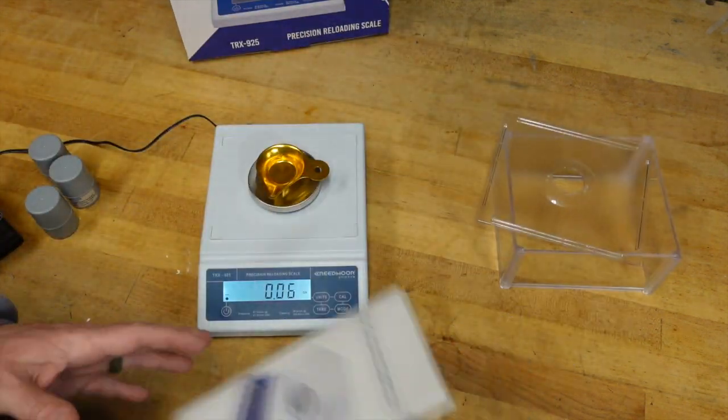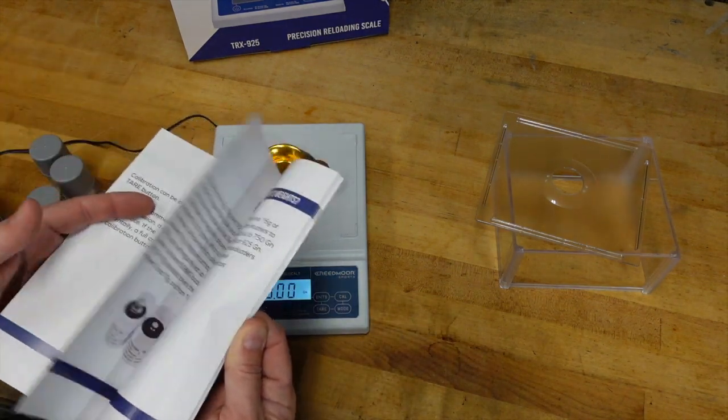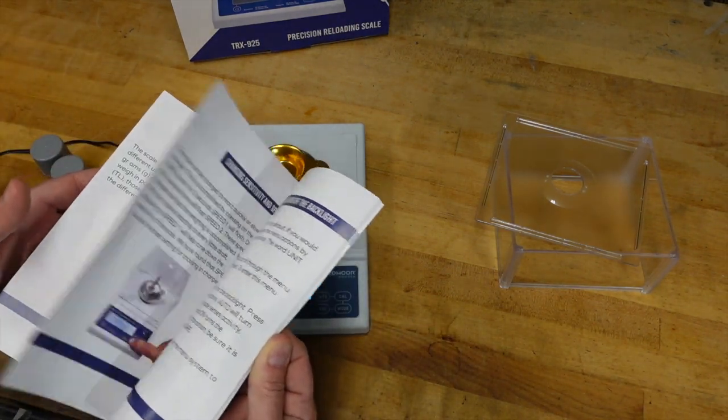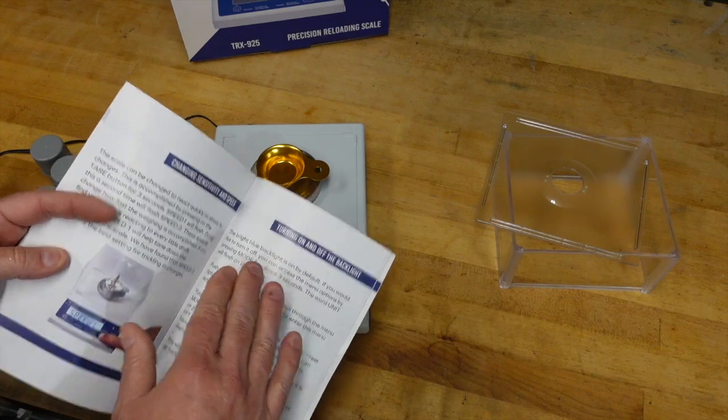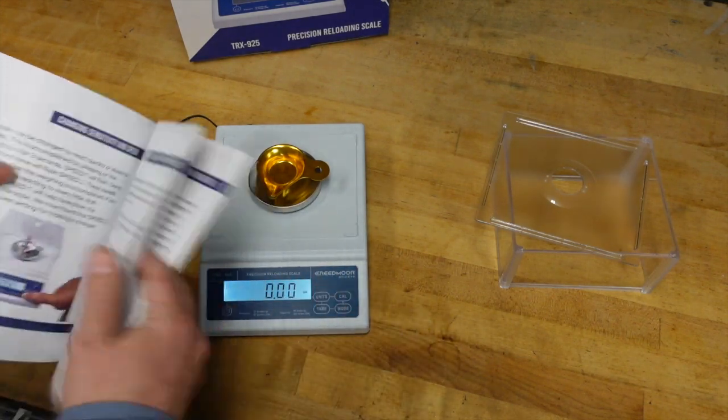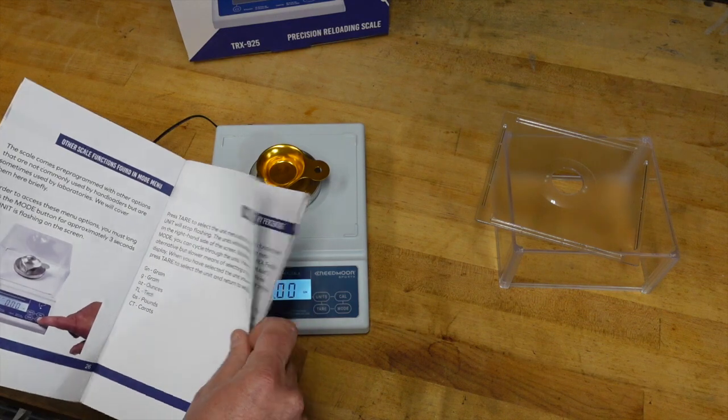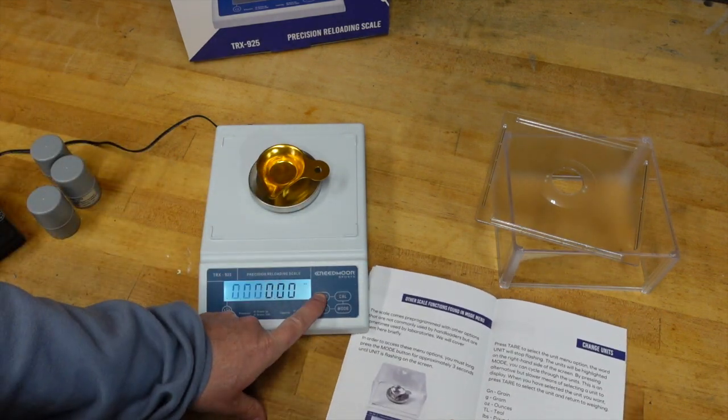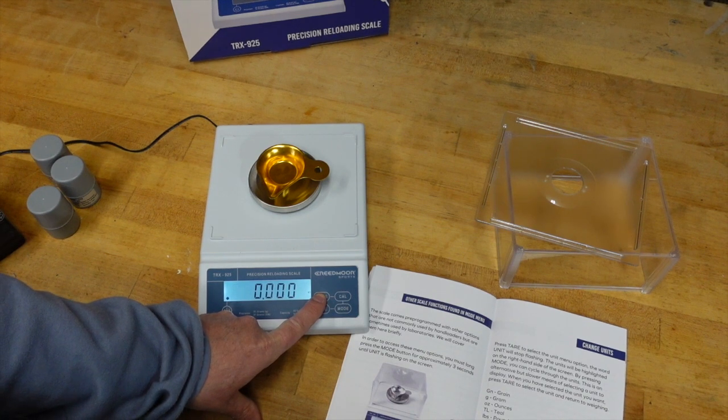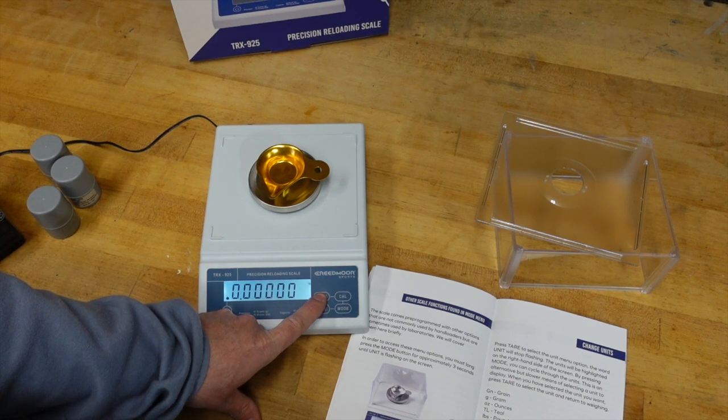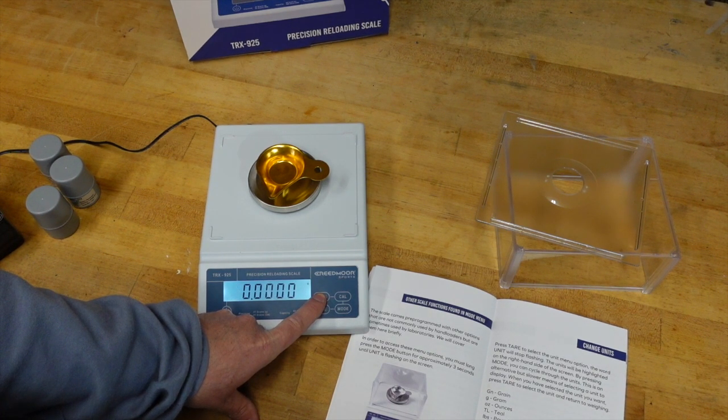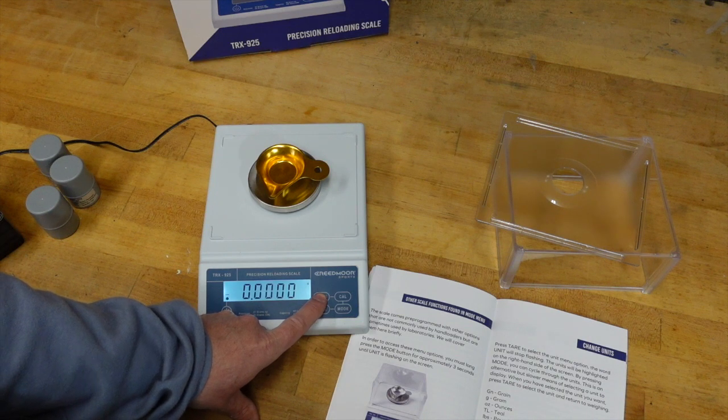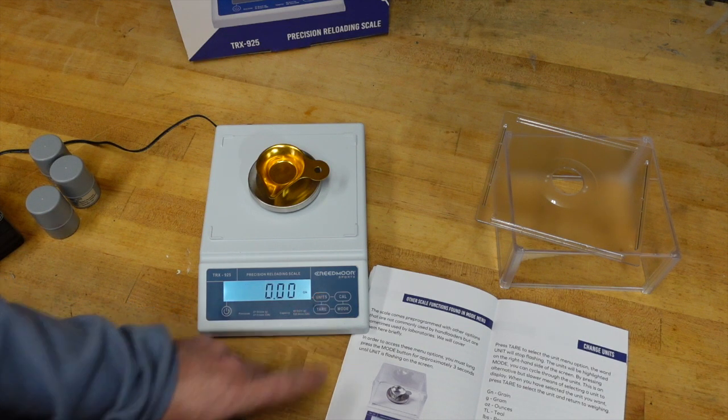All right. So what are some of the things that this can do? Well, I'm just going to show you here. When it comes to some of the options, you can turn the backlight on and off. Great. You can change the units. So if I do go into the units, you'll see here, they have really good instructions. You have ounces, you have carats, you have pounds, tael, which to be honest I've never used, grams and of course grains.